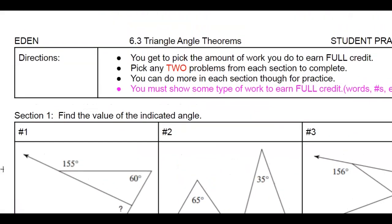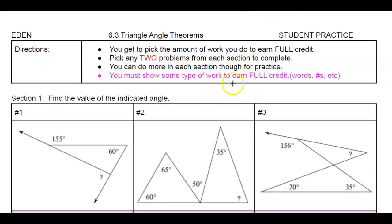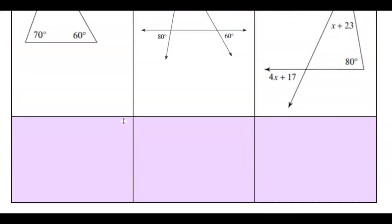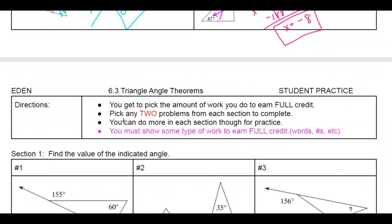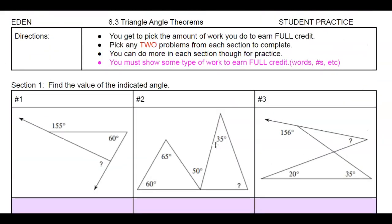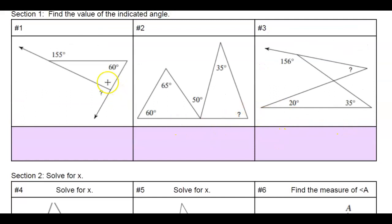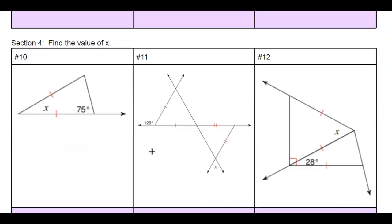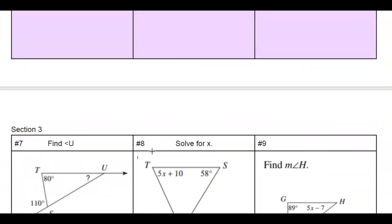For student practice, there are four sections with three problems each. Pick any two from each section — that's eight problems minimum to submit. Show some type of work when possible: write an equation, label other angles, or write some words explaining your thought process. Your grade won't be downgraded for doing more. Good luck!